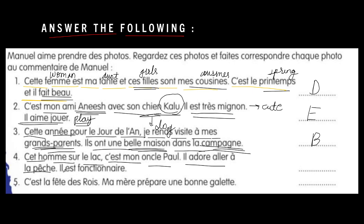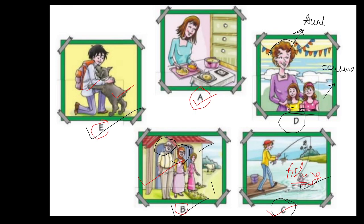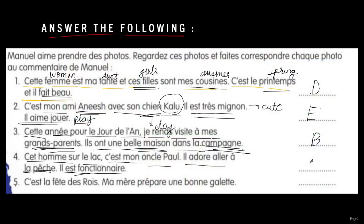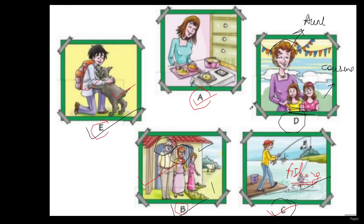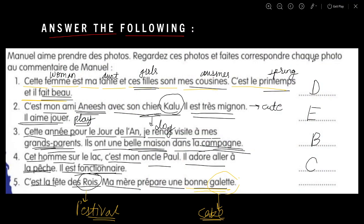Next sentence: a man on the lake — he is my Uncle Paul. He loves to catch fish; he is a fisherman. The only image showing a fishing scene matches C, so we write C there. The last sentence mentions Ruha — a festival — where my mother is preparing a galit, which is a type of cake. The only image left shows someone cooking, so we write A there.